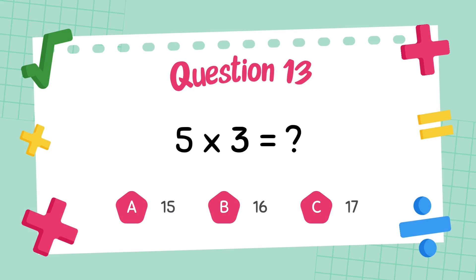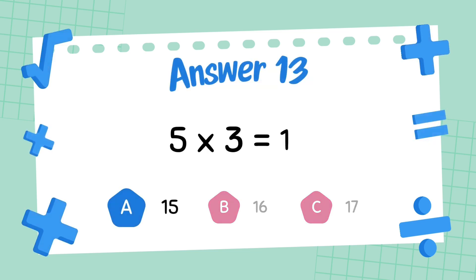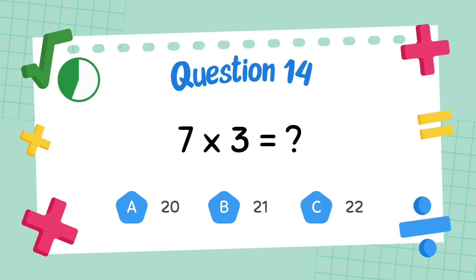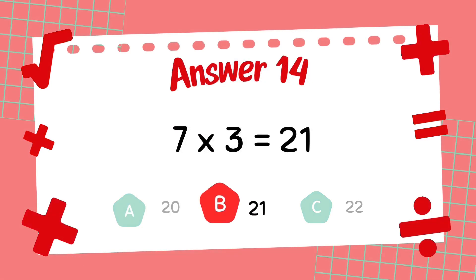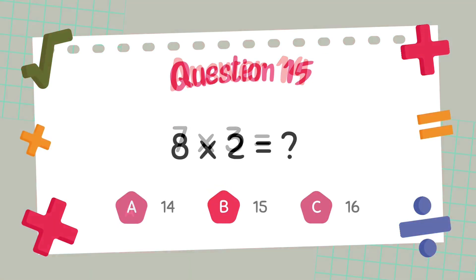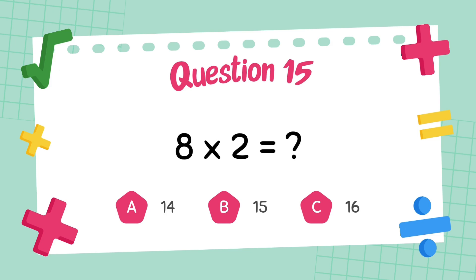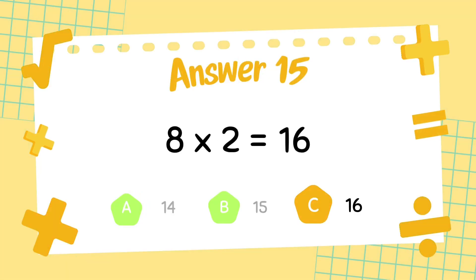What is 5 multiply 3? The answer is 15. What is 7 multiply 3? The answer is 21. What is 8 multiply 2? The answer is 16.